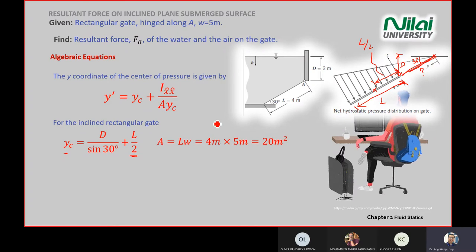So there is another triangular here. You use trigonometry equation, opposite of the angle and the hypotenuse. Then you need to use sine. So you use D divided by sine 30 degree for this question mark length, plus L divided by 2. You get your centroid location from the surface. Area, very straightforward. You take your length times the width, which is 20 meter square.